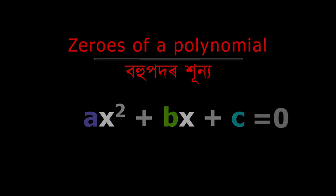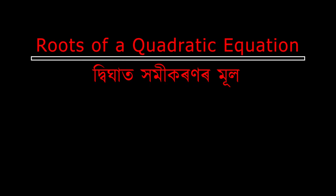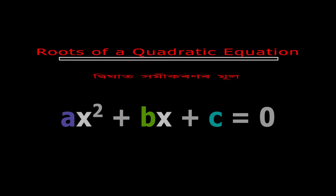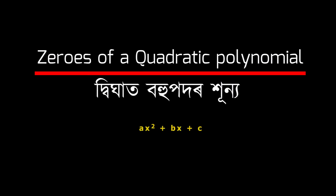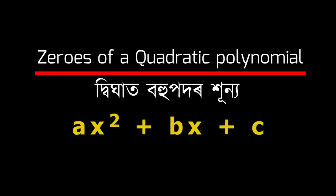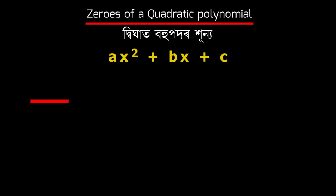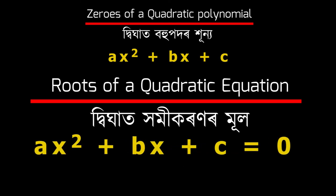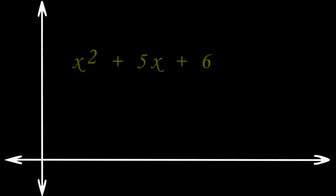The roots of a quadratic equation are the values of the variable for which the value of the quadratic equation becomes 0. Remember that the zeros of a quadratic polynomial ax squared plus bx plus c and the roots of a quadratic equation ax squared plus bx plus c equal to 0 are the same.